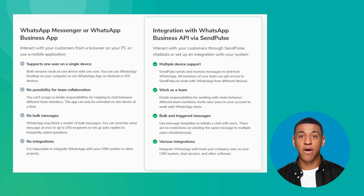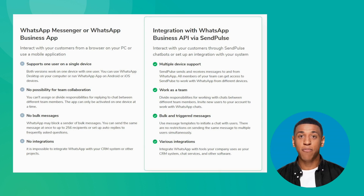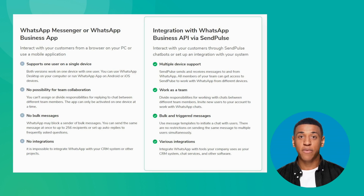Now let's look at the benefits of using WhatsApp Business API. SendPulse is a Facebook partner and an official provider of the WhatsApp Business API, which means multiple device support. All team members can access SendPulse to work with WhatsApp from different devices. You can distribute chat managing responsibilities between team members and invite new users to your SendPulse account.